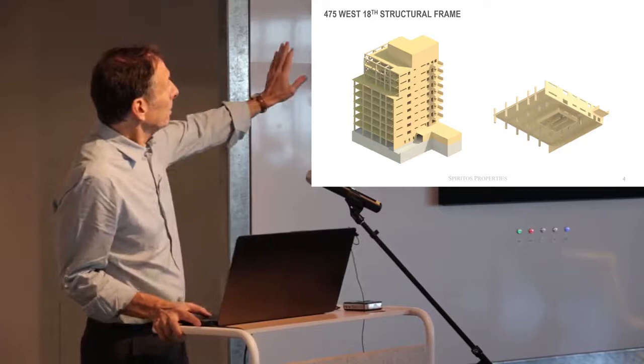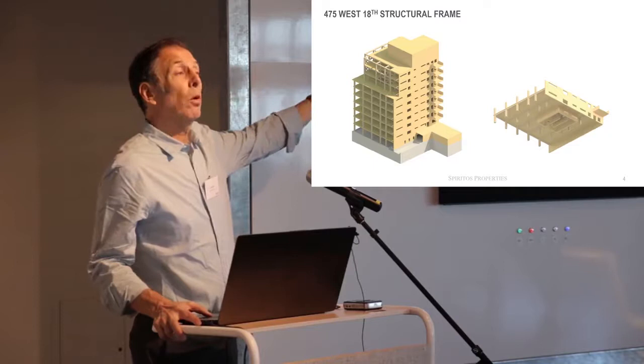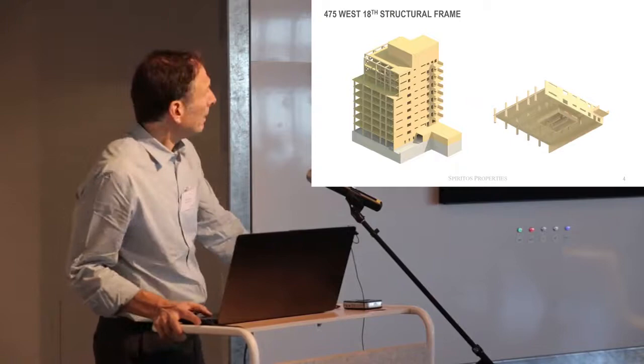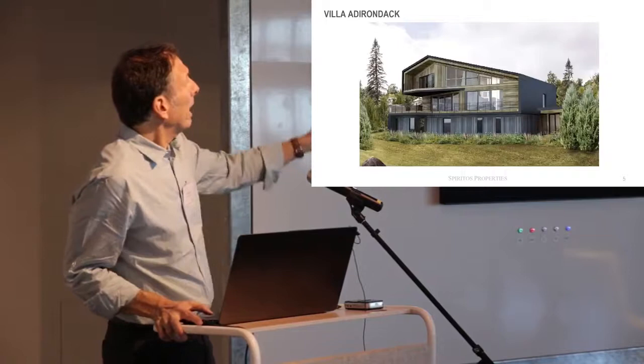But it has lot lines on both sides where we're going to use CLT wall panels. It's completely timber. The core is timber. The shear walls are timber. The floors are timber. And it's a glue-lamb frame. You can see the axonometric on the right.